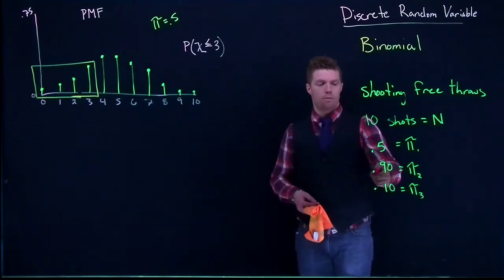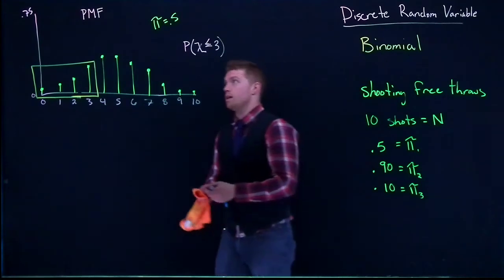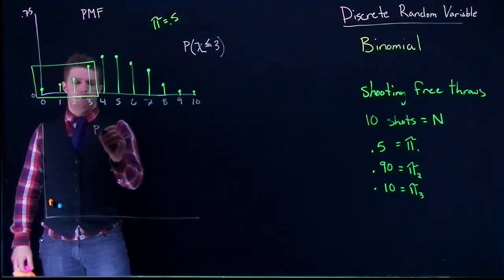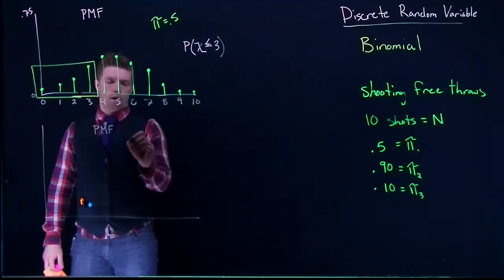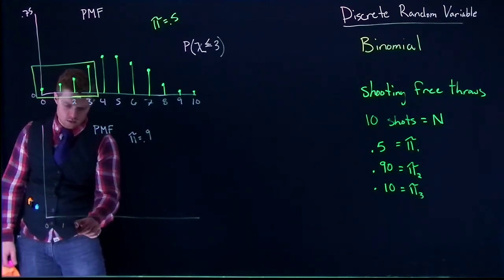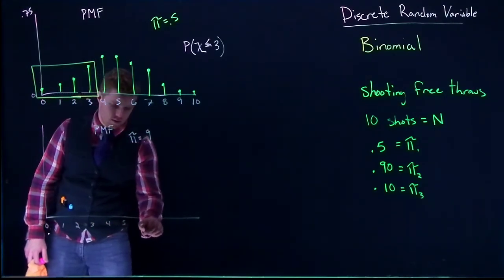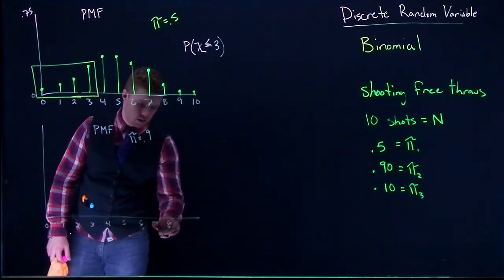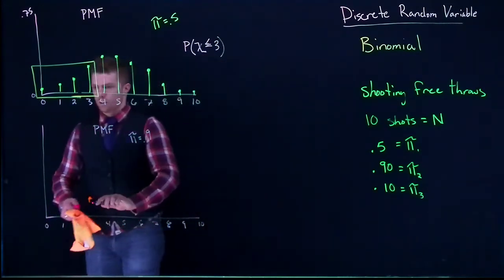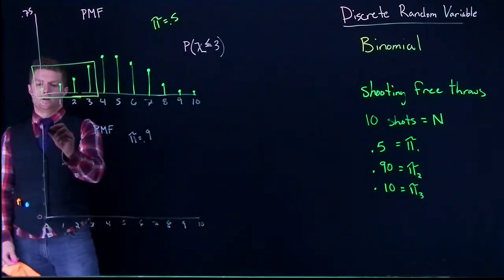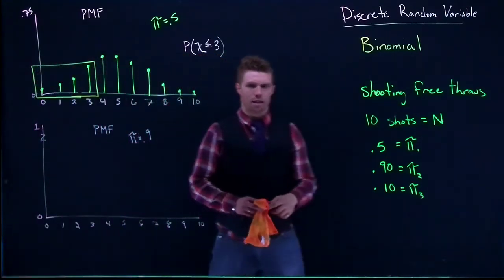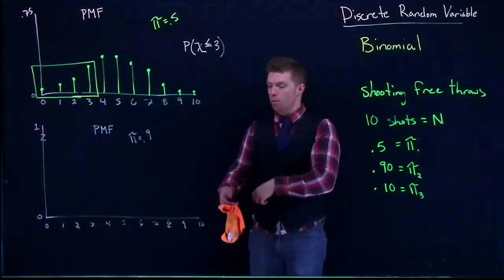Let's look at what happens if our probability of success is really high, like 90%. When that happens, this is what we're going to get. I'll put a probability mass function where pi equals 0.9. We're still going to do 0, 1, 2, 3, 4, 5, 6, 7, 8, 9, and 10. We've got our numbers. We're going to start at 0 and go all the way up to 1. I'm going to put a little break right here because I know I'm not going to draw it to scale correctly.